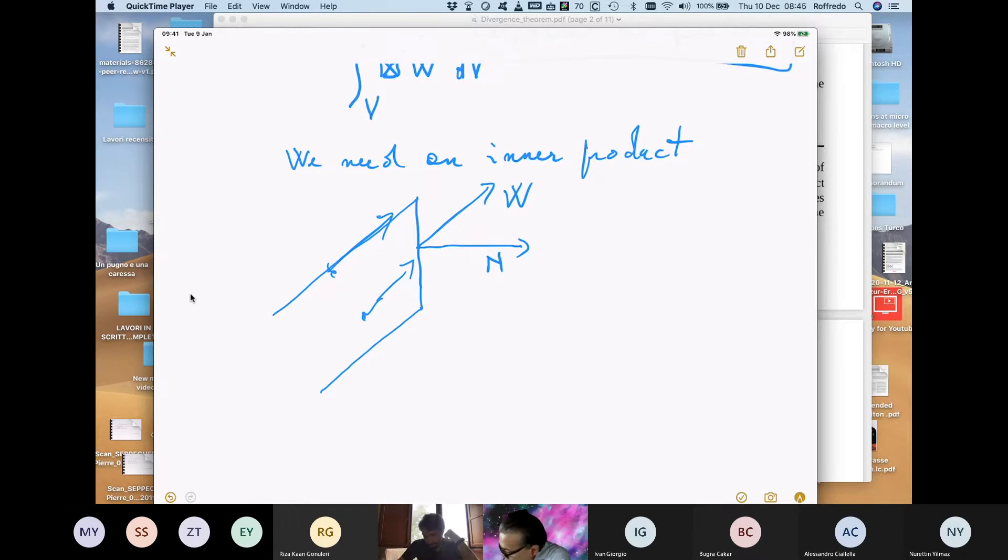The cosine of this angle, so let's call it some alpha. The cosine of alpha gives you the crucial quantity for calculating, starting from W.